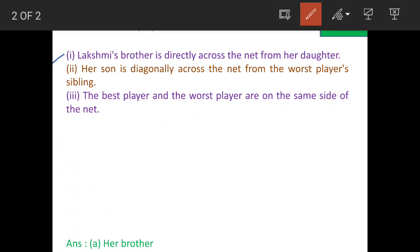Now let's examine condition 1. Condition 1 says Lakshmi's brother is directly across the net from her daughter. So let's say this is the net. This is Lakshmi's daughter. And this is how Lakshmi's brother and Lakshmi's daughter are located. Now we have to find out the other two positions and then determine who is the best player.